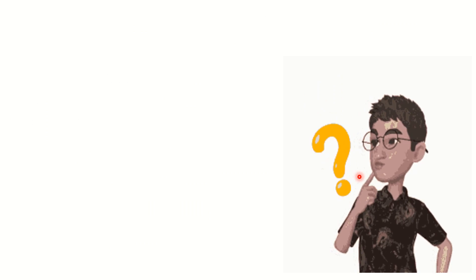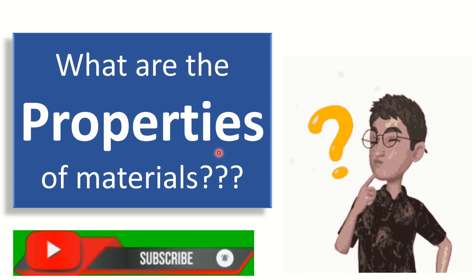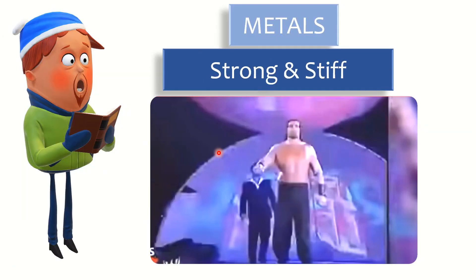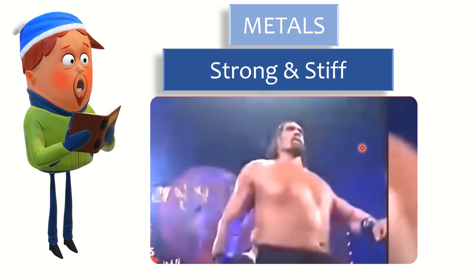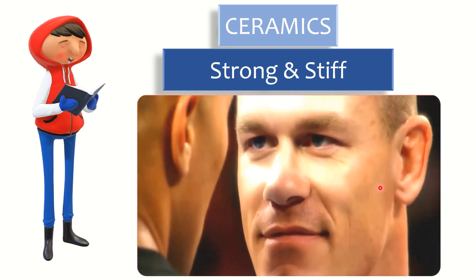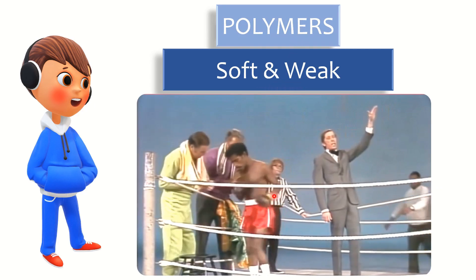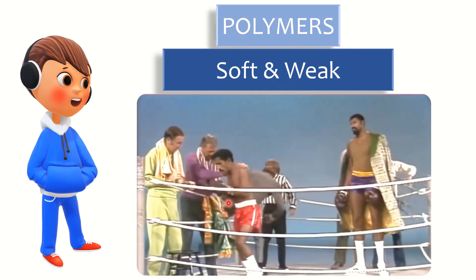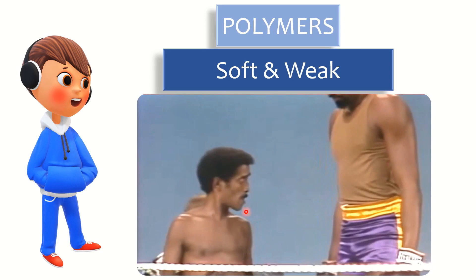Did you get one more doubt on what are the properties of materials? Now we have seen what is the material and how they are classified. But what are the properties of those materials? So let's go into that. Basically, metals are strong and stiff. Ceramics are also comparatively strong and stiff. Whereas polymers are soft and weak — in comparison to metals and ceramics, polymers are soft and weak in general.